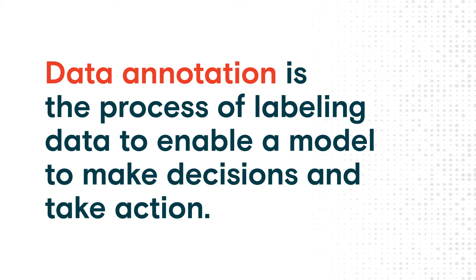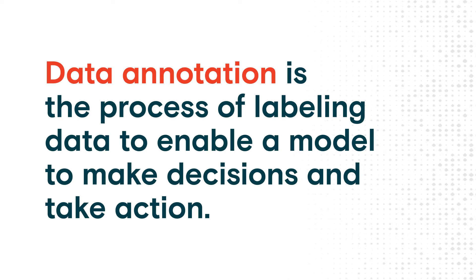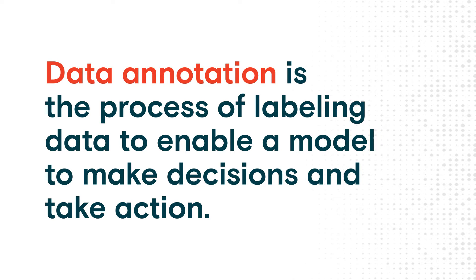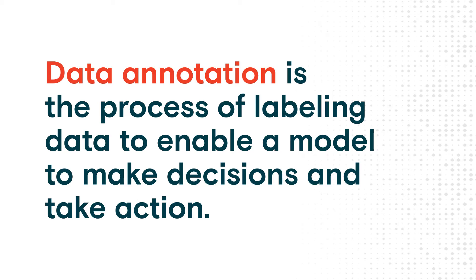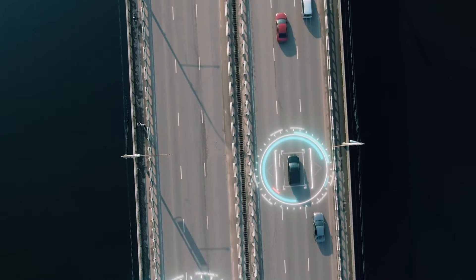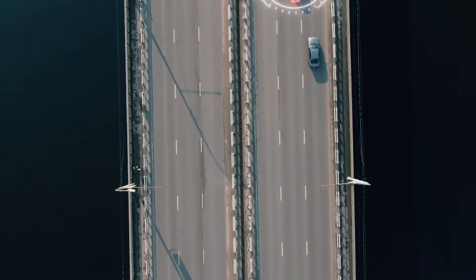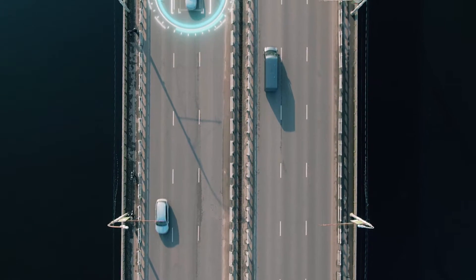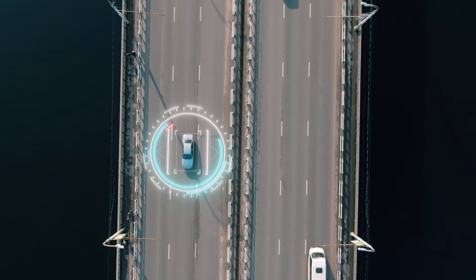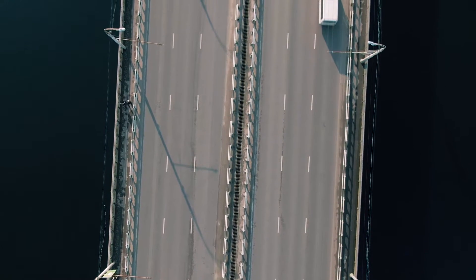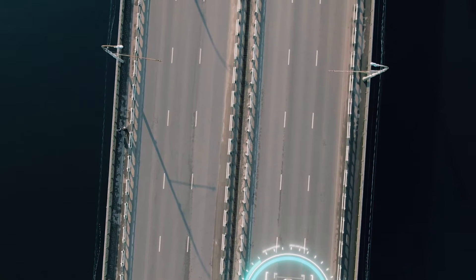Data annotation is the process of labeling data to enable a model to make decisions and take action. A model must be trained to understand specific information. This is done with training data that is properly categorized and annotated for a specific use case.